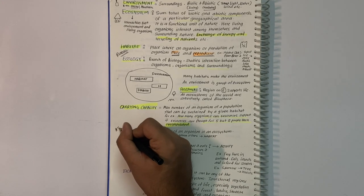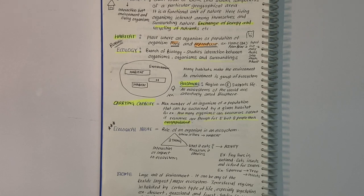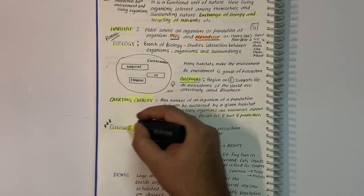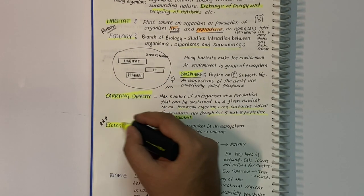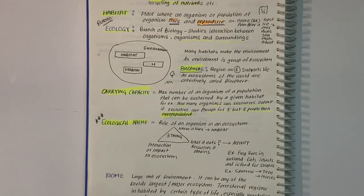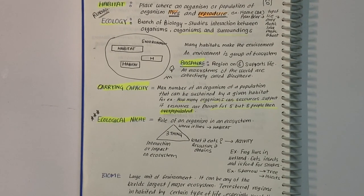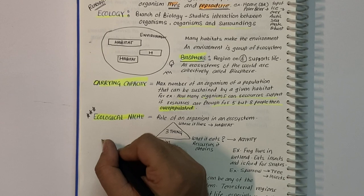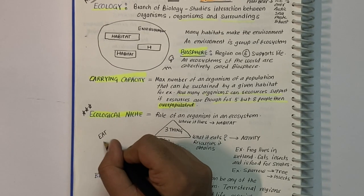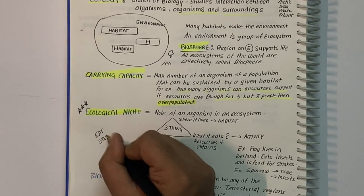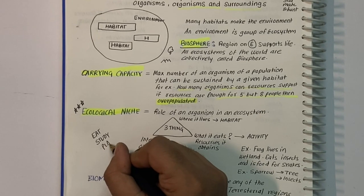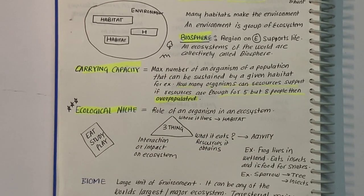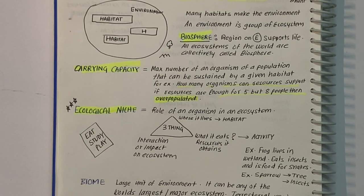Ecological niche is the role of an organism in an ecosystem where it lives. The society you live in is your habitat. If you're a student, your functional role is you eat, play and study. If you're a policeman, you maintain law and order.